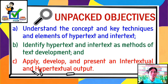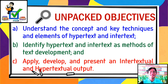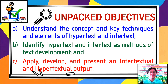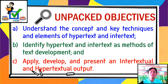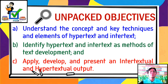There are two techniques of context of text development: hypertext and intertext. These are the two techniques in making context of text development, in associating or connecting text to other texts. Our learning competency for this lesson is to identify the context in which a text was developed — through hypertext and intertext. After this lesson, you are expected to: understand the concepts and key techniques of hypertext and intertext; identify hypertext and intertext as methods of text development; and apply, develop, and present an intertextual or hypertextual output.